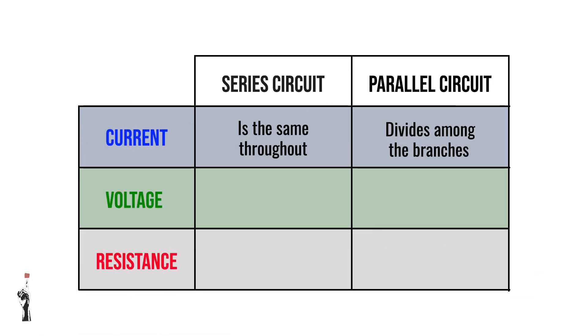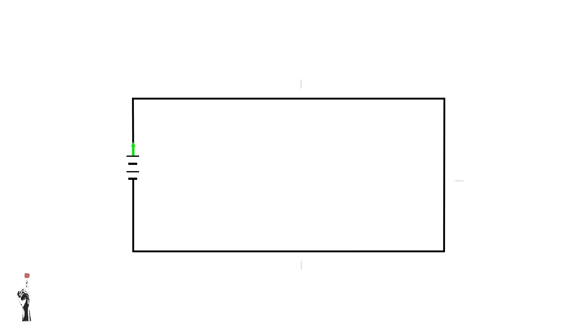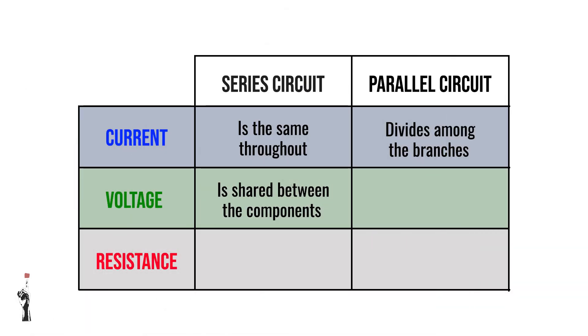When it comes to the voltage, it is shared between the components in a series circuit. But in a parallel circuit, it is full on each branch.